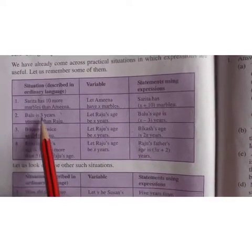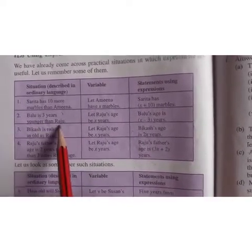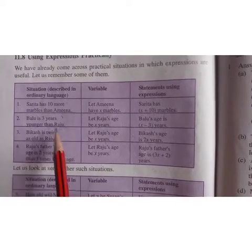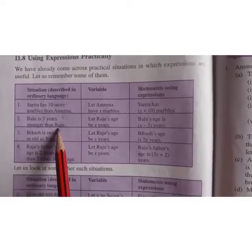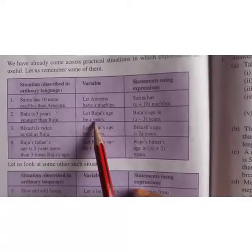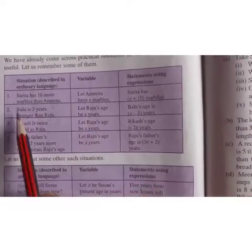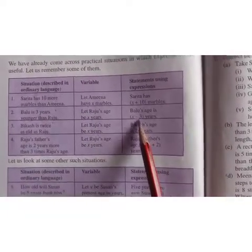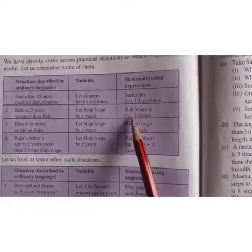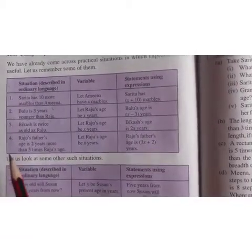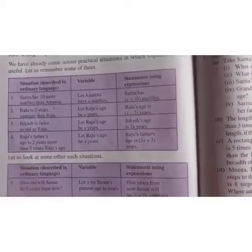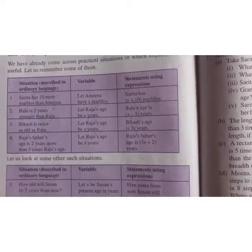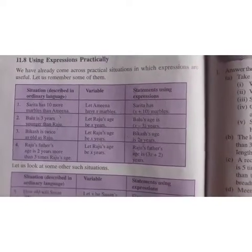Next we have, Baloo is 3 years younger than Raju. So children, what we have to do now? We have to take Raju's age as X years, whereas Baloo will be X minus 3, that is younger. Whenever you come across the word younger, you have to use subtraction, that is minus. And if it is elder or older, then you have to write plus whatever the given number is.